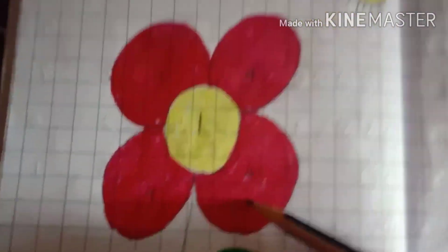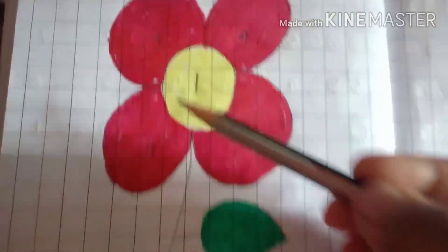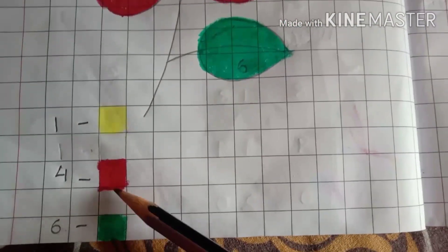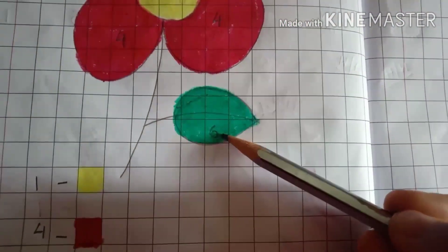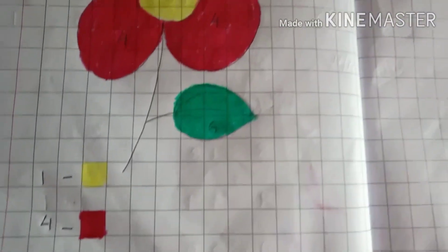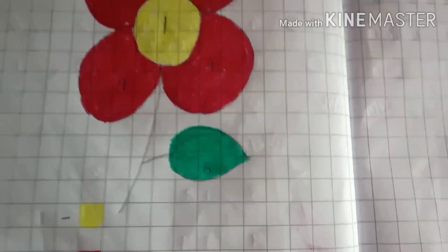This is 4, 4, 4 and 4. So, 4 we have to color with red. This is 6. This is 6. We have to color with green.